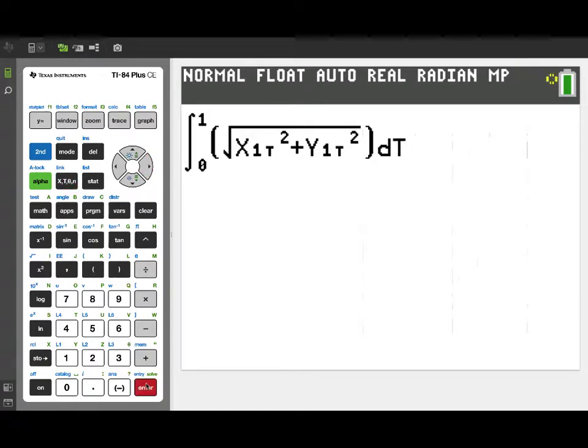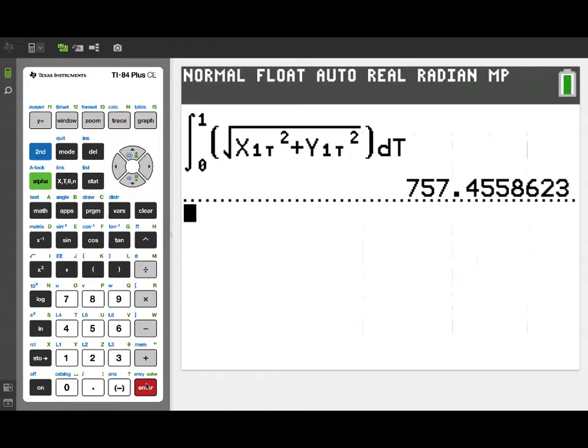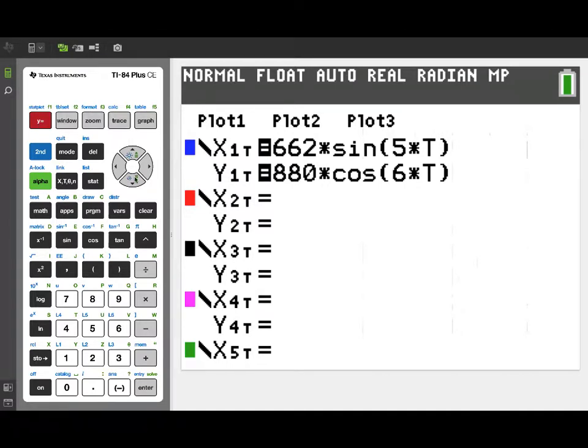Once we calculate that, we'll get the answer of 757.45, either 5 truncated or 6 rounded. That's in meters. That was the units given for the position.